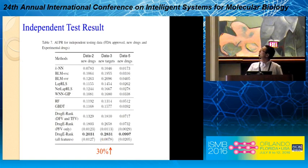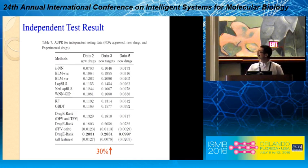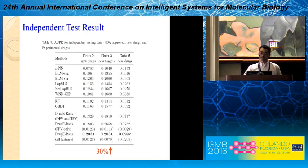We then ran the independent testing on datasets two, three, and five. In this case, the improvement is more significant — almost 13 percent improvement over the component methods.